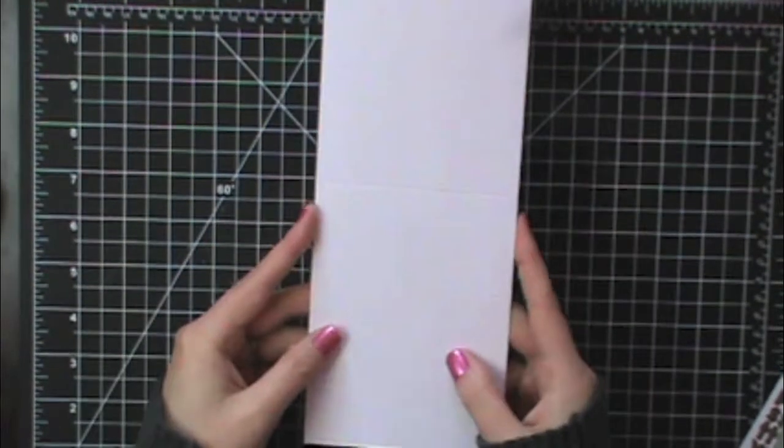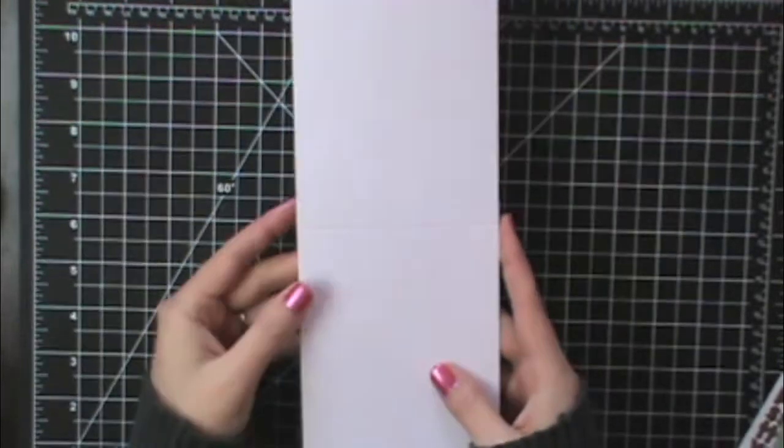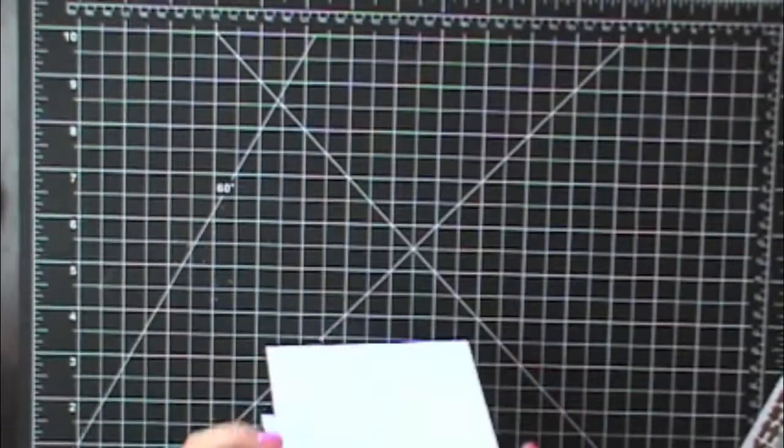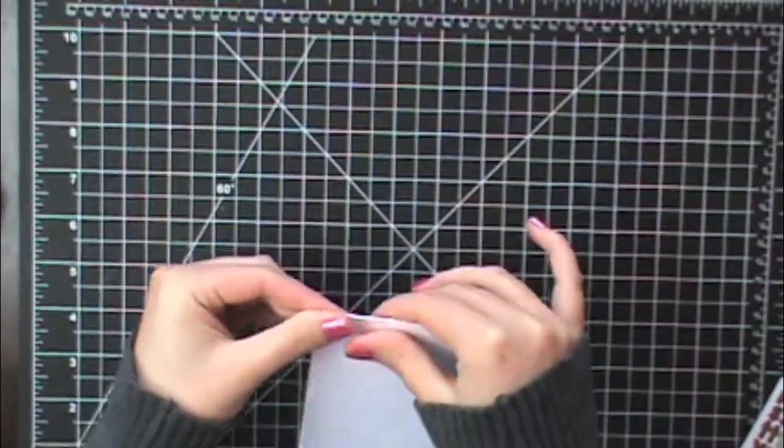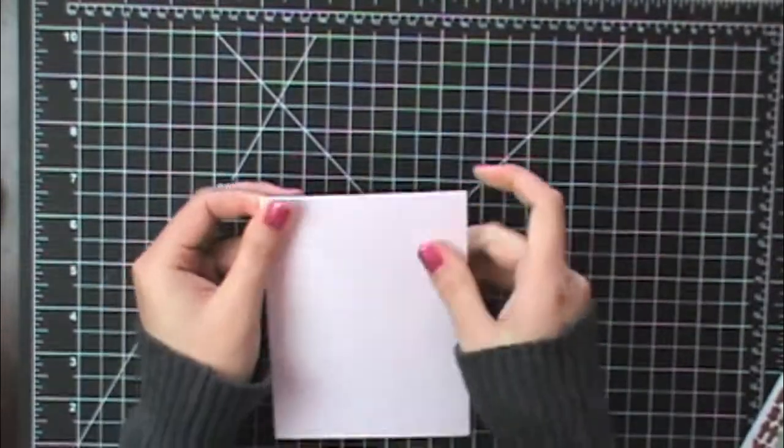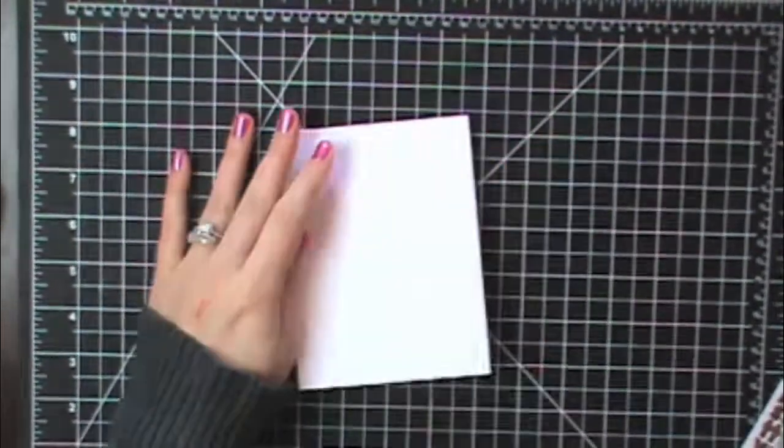So this is our wood grain cardstock. I just cut it at four and a half down the sheet of paper in half and then scored it at five and a half. So this is going to be my card base. The cool thing about this wood grain cardstock is it's super thick so it's perfect for making a card base.